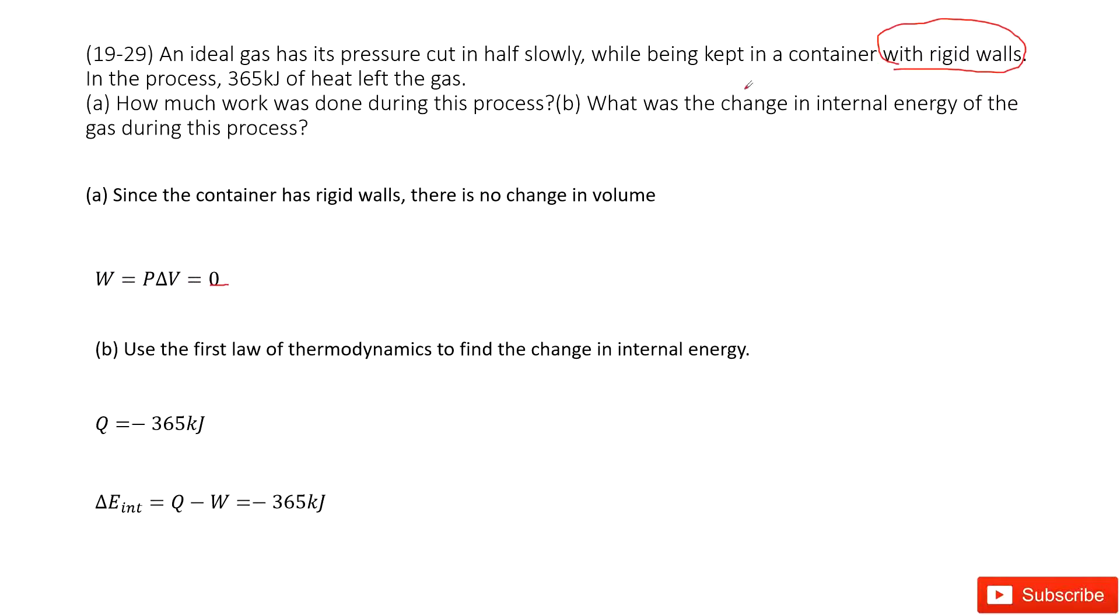Part b asks what was the change in internal energy of the gas. The internal energy change is delta E_int equals Q minus W. W equals zero. Q is negative 365 kilojoules.